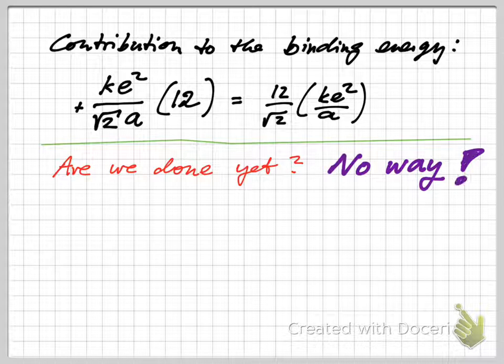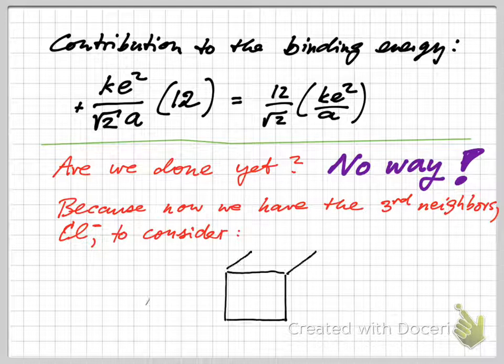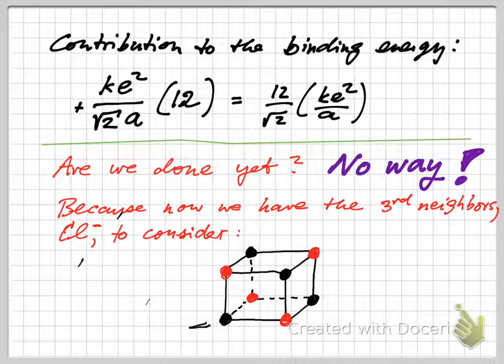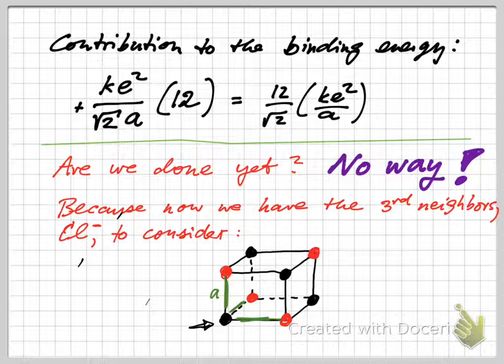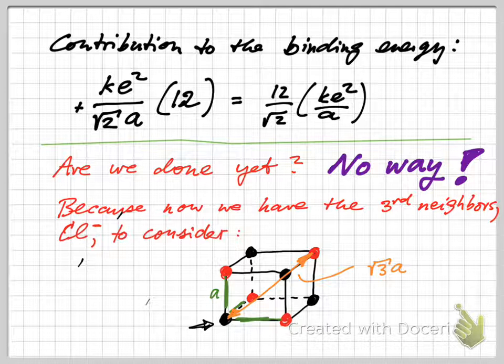Are we done yet? You can guess the answer: no way, because now we want to go out to the third neighbors, which are again negative chlorine ions. Here I'm going to draw it in perspective. You can think of this particular sodium, then I can draw the nearest chlorine there at distance a away. But what about those?